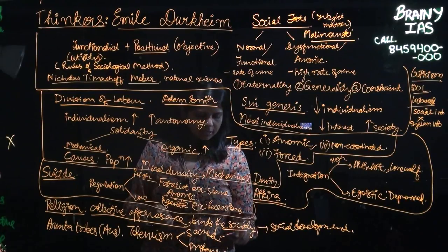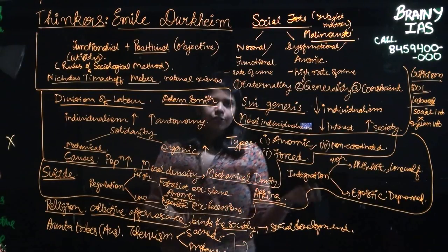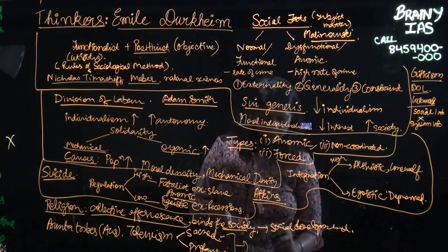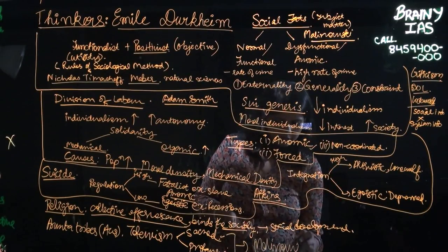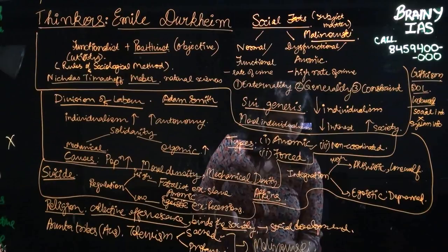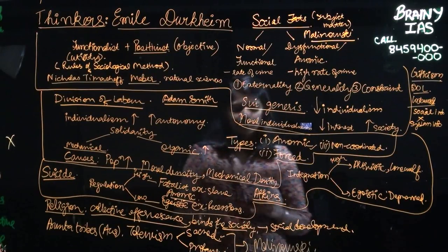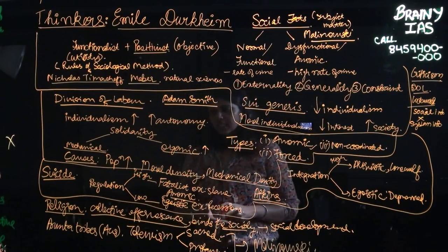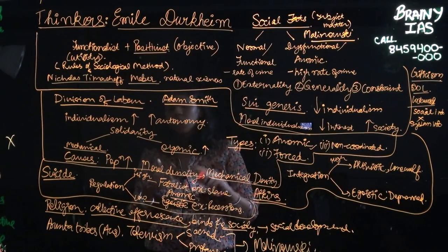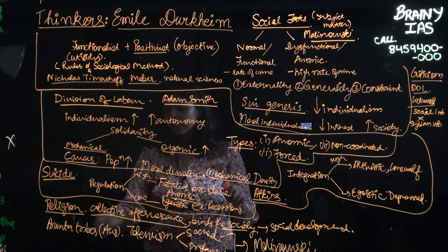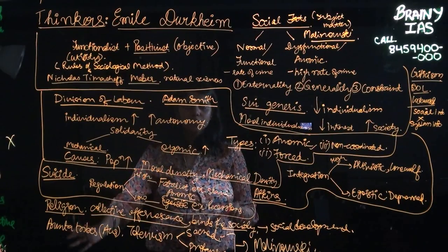Now this was heavily criticized by again whom? Our favorite anthropologist with an interest in social sciences, Malinowski. So Malinowski says that Durkheim becomes too functionalist and too positivist when explaining something as abstract as religion.